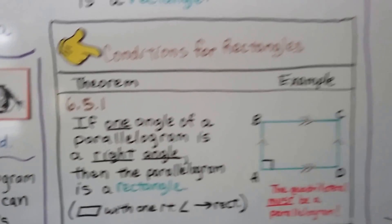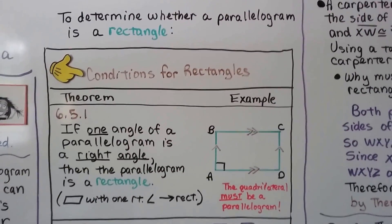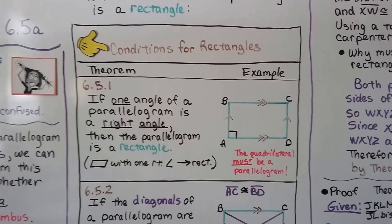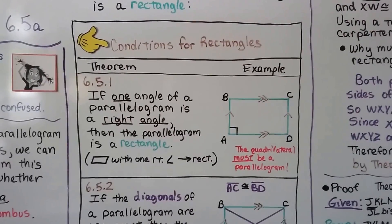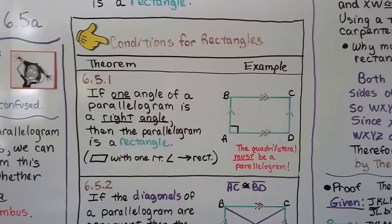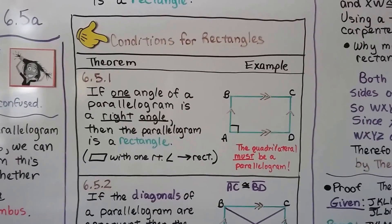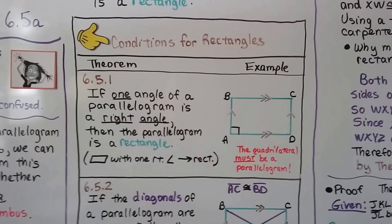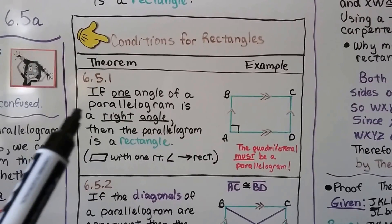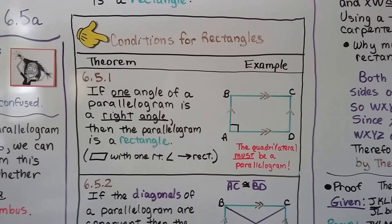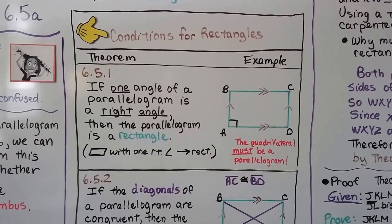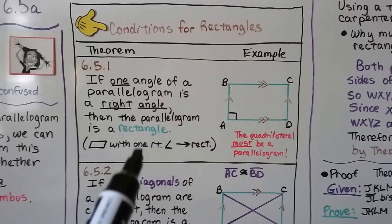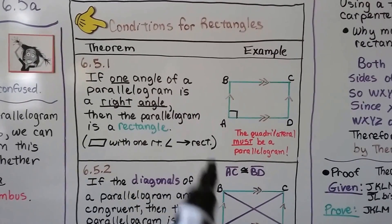To determine whether a parallelogram is a rectangle, we have two theorems — these are the conditions for rectangles. Theorem 6.5.1 says if one angle of a parallelogram is a right angle, just one, then the parallelogram is a rectangle. But be careful: the quadrilateral must be a parallelogram. In geometric notation: a parallelogram with one right angle, therefore rectangle.